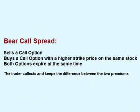To place a bear call spread, a trader sells a call option and buys a call option with a higher strike price on the same stock, both expiring at the same time.